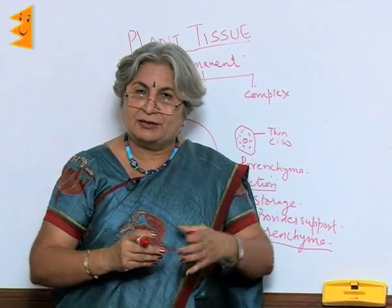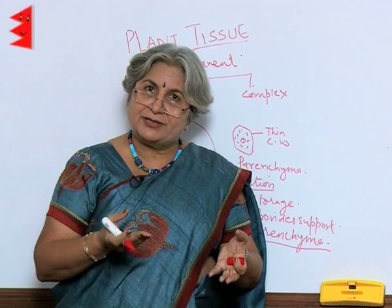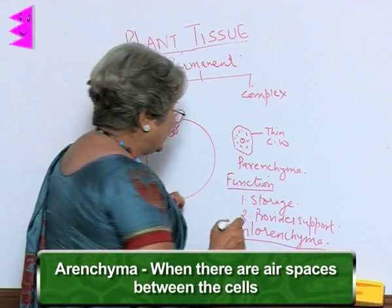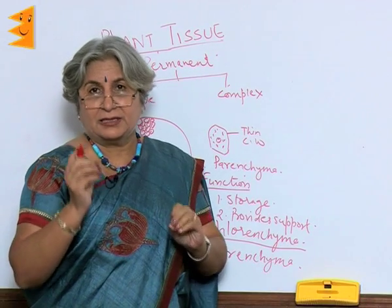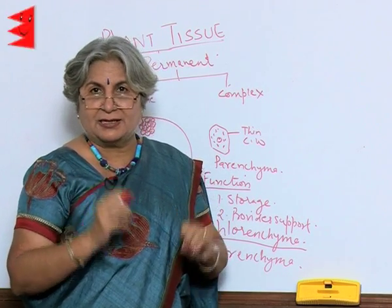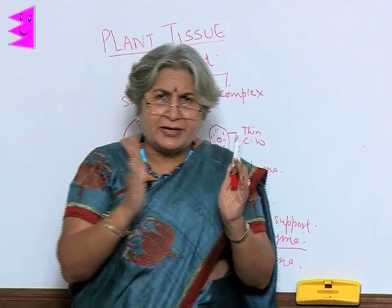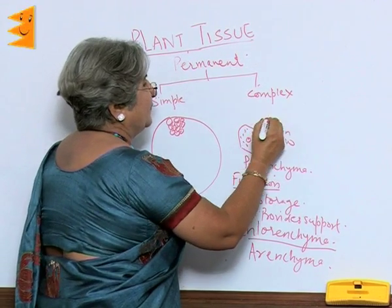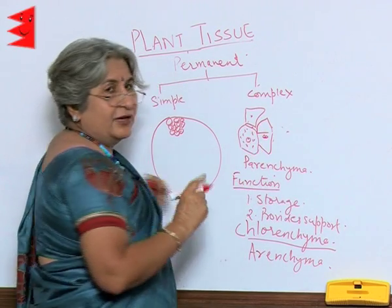If we go to aquatic plants, the characteristic of the aquatic plant is it can float — like lotus or water lily. What provides buoyancy is air spaces between the cells, and when there are air spaces between the cells it is called aerenchyma, which is present even to some extent in the leaves as spongy tissue. So there is spongy tissue, or aerenchyma, in leaves and in aquatic plants. In general, parenchyma cells are loosely arranged so there are a lot of air spaces between them.